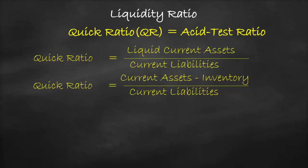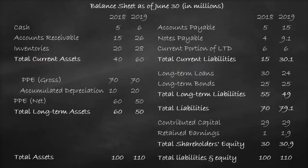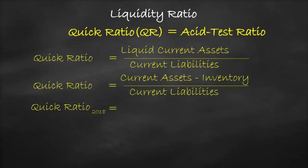We get the current assets, inventory, and current liabilities values from the balance sheet. So let's calculate the quick ratio for the year 2018. Current assets are equal to $40 million minus inventory of $20 million, all divided by current liabilities of $15 million, which is equal to 1.33 times. The unit of a quick ratio is times.